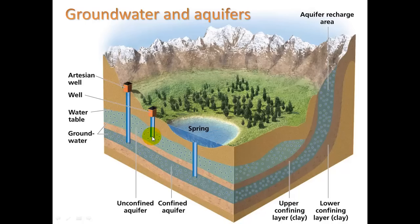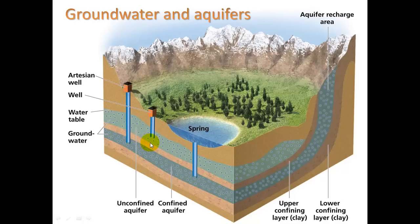We have a well going into this unconfined aquifer, and an artesian well going into the confined aquifer. Artesian water commands a premium price in bottled water because it's sandwiched between clay and less prone to pollution from leaching, chemical spills, or landfills. We also see the water table — the top of the water level — and the aquifer recharge area, where water hits the surface, soaks through the earth into the aquifer, recharging it by adding water.